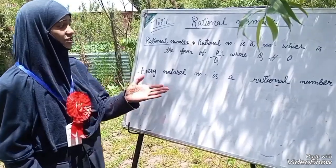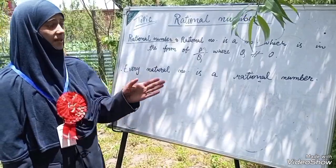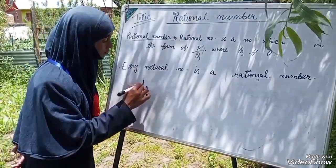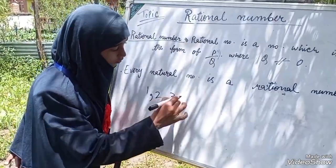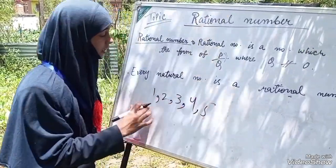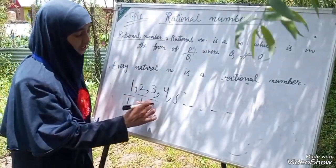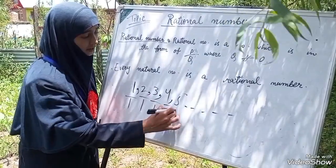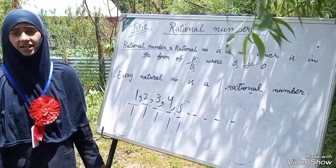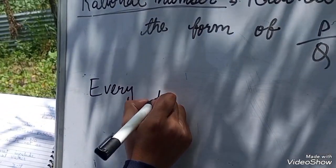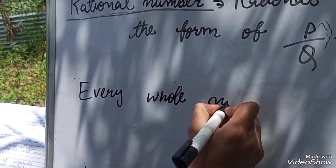Every natural number is a rational number. For example, one, two, three, four, five — these are natural numbers.